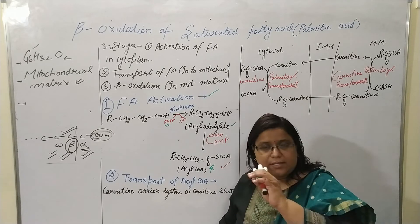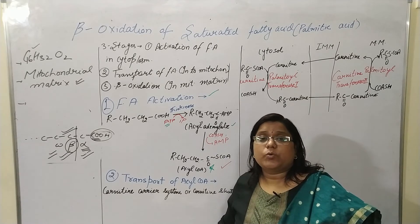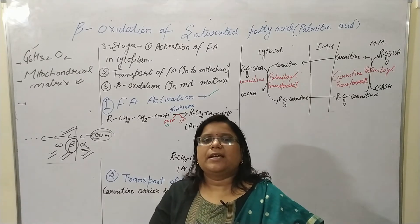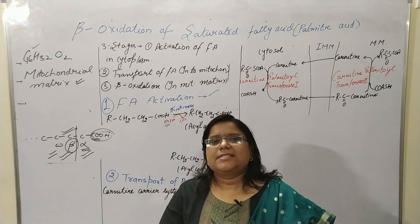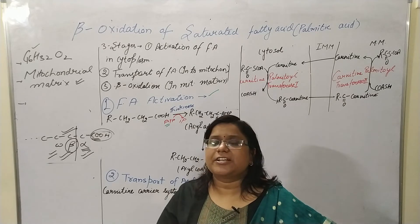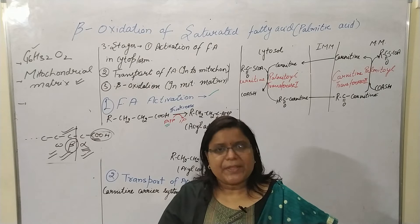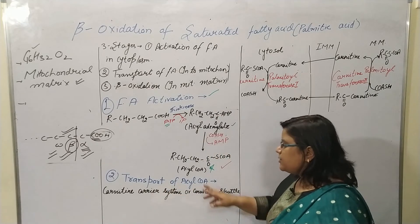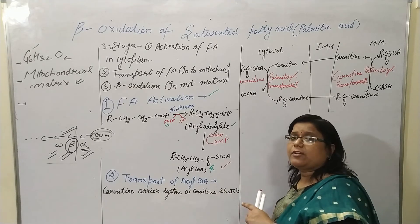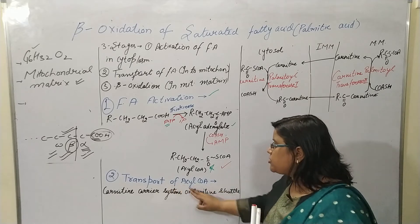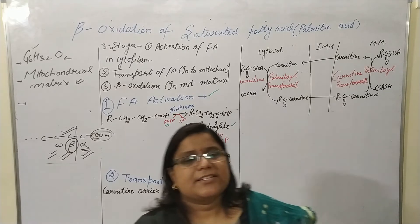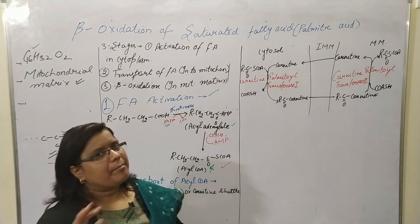However, there is one big issue: the acyl coenzyme A is not at all permeable to the mitochondrial membrane. So the acyl coenzyme A is transported with the help of the carnitine shuttle system, also called the carnitine carrier system, which transports acyl coenzyme A into the mitochondrial matrix.